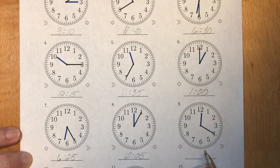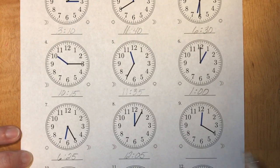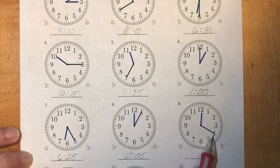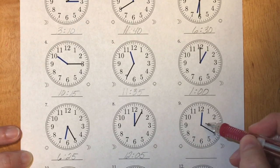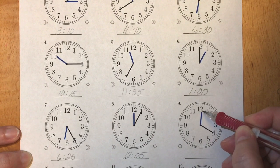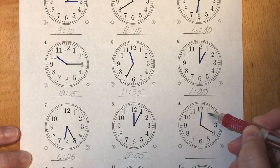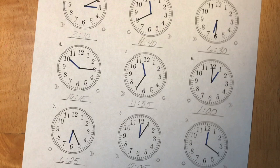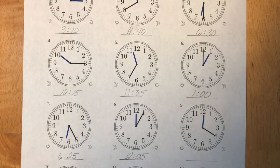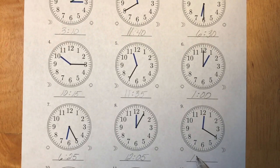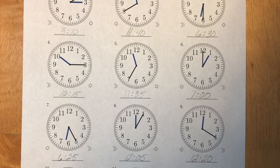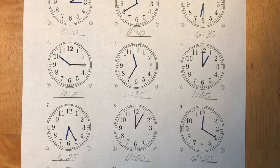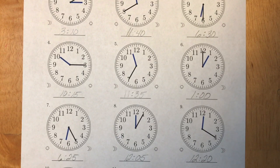For our last clock, number nine, our minute hand is pointing at the four. So that would give us twenty minutes when we skip count. Our hour hand is almost at the twelve. Not even close to the one. So we're gonna go with the twelve o'clock hour. So this clock shows twelve, twenty. I hope this was a helpful video on reading analog clocks.